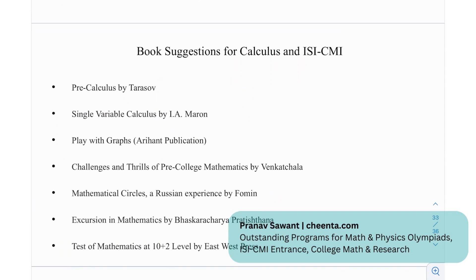Okay, so we have seven book suggestions for calculus and ISI-CMI: Pre-calculus by Tarasov, Single Variable Calculus by I.A. Maron, Playing with Graphs, Challenges and Thrills of Pre-College Mathematics, Mathematical Circles, Excursion in Mathematics, and A Test of Mathematics at 10 plus 2 Level.